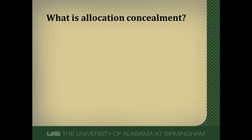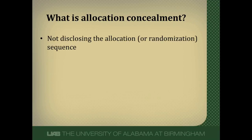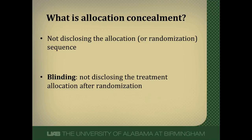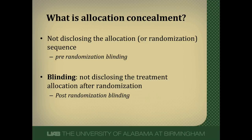That's where allocation concealment comes in. Randomization is great at equally distributing prognostic factors, but it can be overcome if proper allocation concealment is not done. Allocation concealment is not disclosing to patients or to those enrolling people in the trial the allocation or randomization sequence. This differs from blinding — in double blinding, blinding occurs after randomization, not letting the researchers or the patients know what treatment they're on. So you can think of allocation concealment as pre-randomization blinding, and traditional blinding is post-randomization blinding.